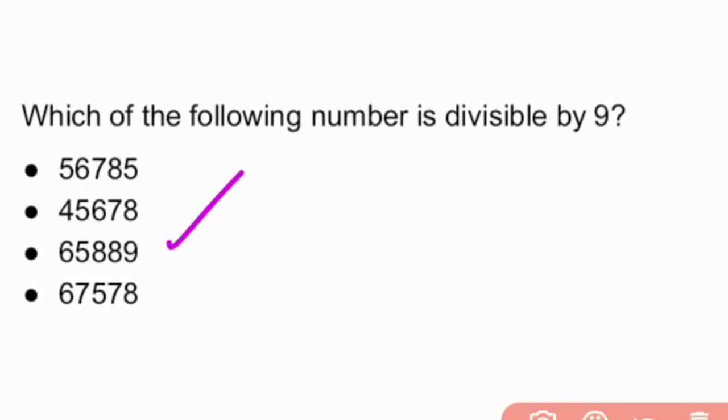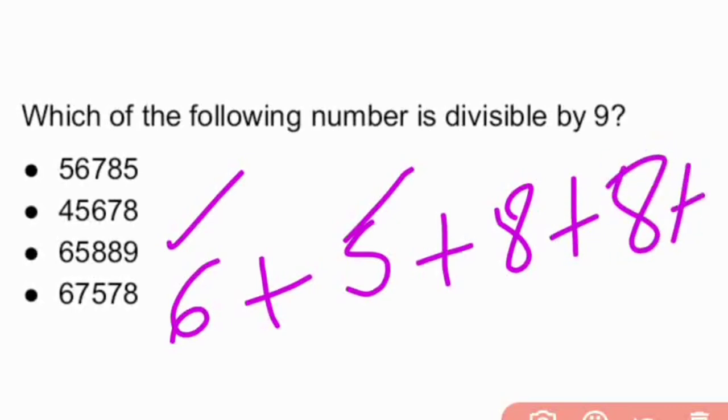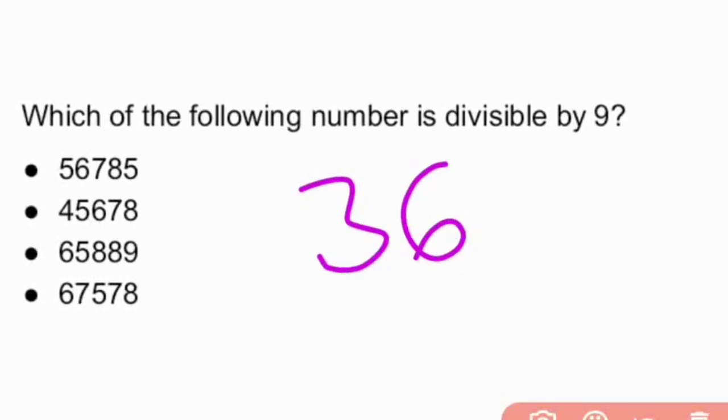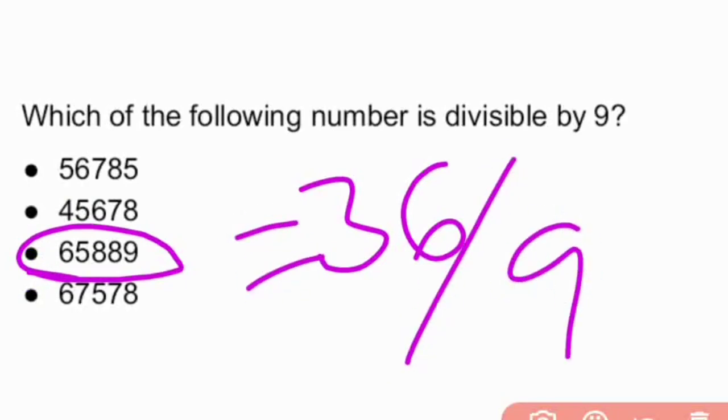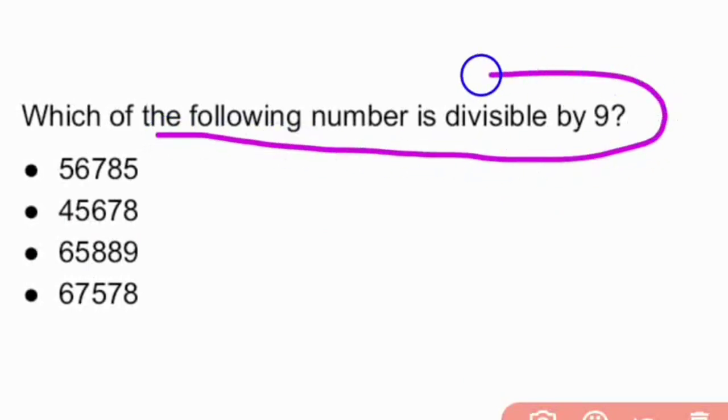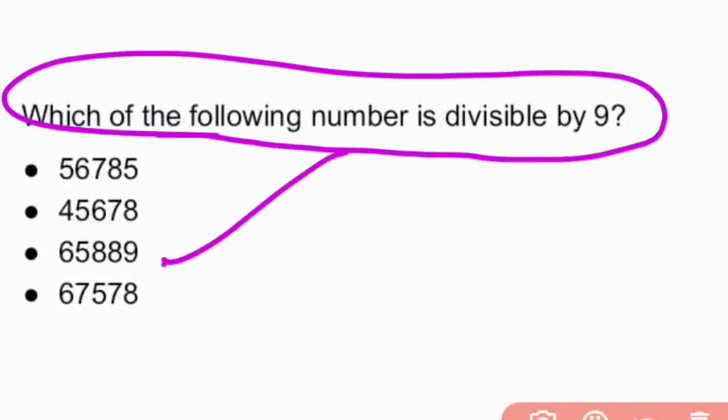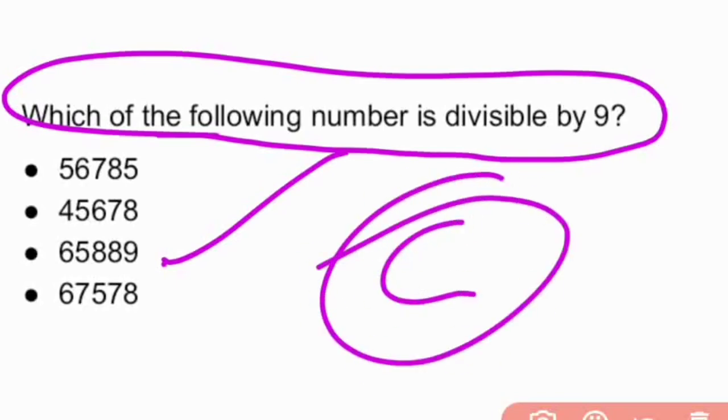Now let us take option 3: 6 + 5 + 8 + 8 + 9. Let us add all these numbers. 6 + 5 = 11, 11 + 8 = 19, 19 + 8 = 27, 27 + 9 = 36. We got it as 36 total. 36 is definitely divisible by 9. 9 × 4 = 36. So the number which is divisible by 9 is option C: 65889. So our answer is C.